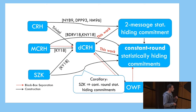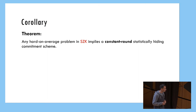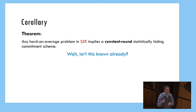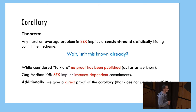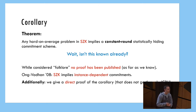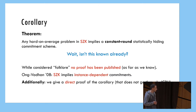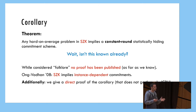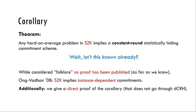Now some of you might be puzzled. This is our corollary — wasn't this known already? It has been regarded in some previous work as a folklore result. But actually, we looked very hard and could not find any published proof of this corollary. The closest is a paper by Ong-Vadhan, who showed that statistical zero knowledge implies instance-dependent commitments — commitments that are either statistically hiding or statistically binding depending on the instance. Additionally, we give a direct proof of this corollary that doesn't go through the DCRH: a direct construction from SZK to constant-round commitments.